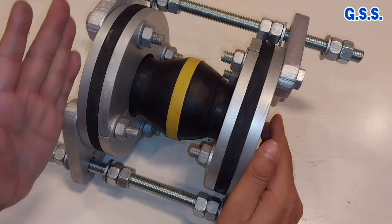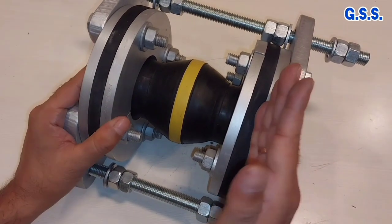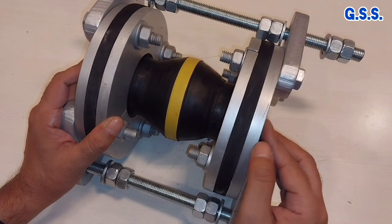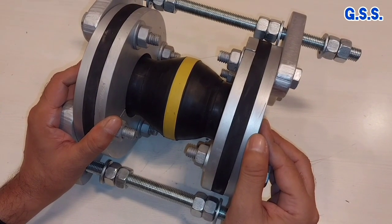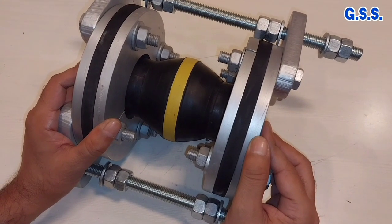We need to specify this face-to-face length of the bellow and this end flange metallic flange drilling standard like ASME B16.5 150 pound like that.